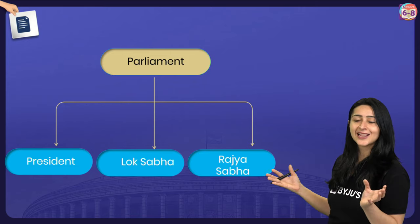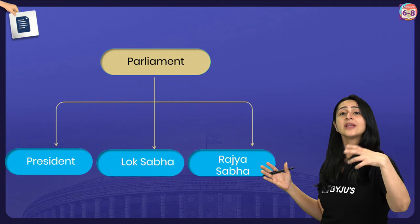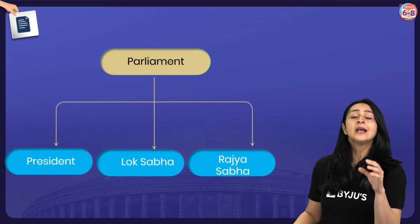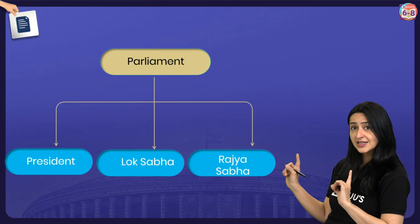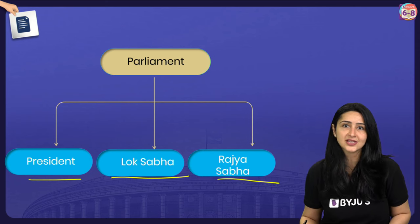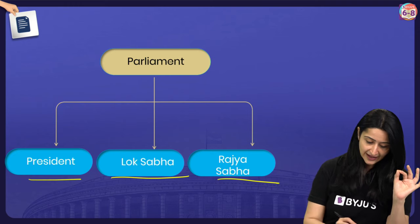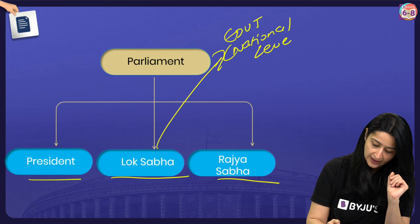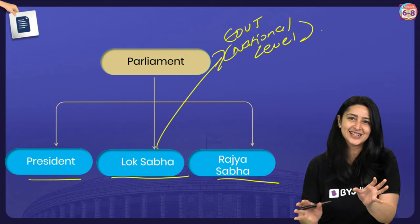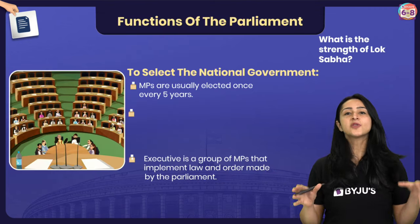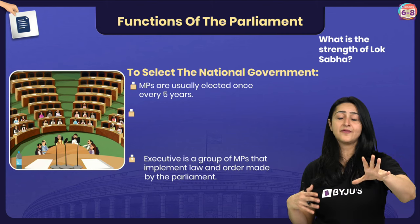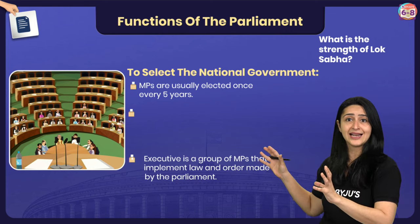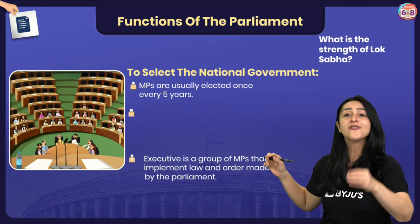Before understanding the functions, let me tell you who the Parliament is made up of. The Parliament consists of the President, the Lok Sabha, and the Rajya Sabha. The government at the national level is elected from the Lok Sabha. Members of the Lok Sabha are elected once every five years, meaning all MPs serve a tenure of five years.